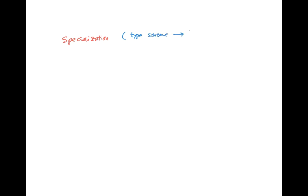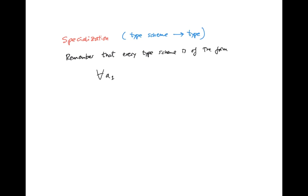So now let's look at specialization. Specialization is the idea that from a type scheme we can get a type. Remember that if we look at the definition of the set of types and type schemes, then every type scheme is of the form a sequence of quantifiers — there are K quantifiers, and K may be zero, so there may be no quantifiers at all — but every type scheme has a sequence of quantifiers and then a type.